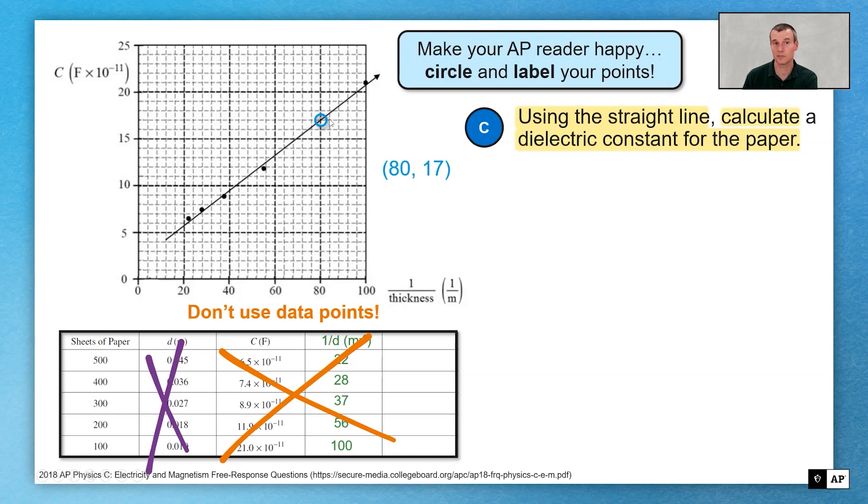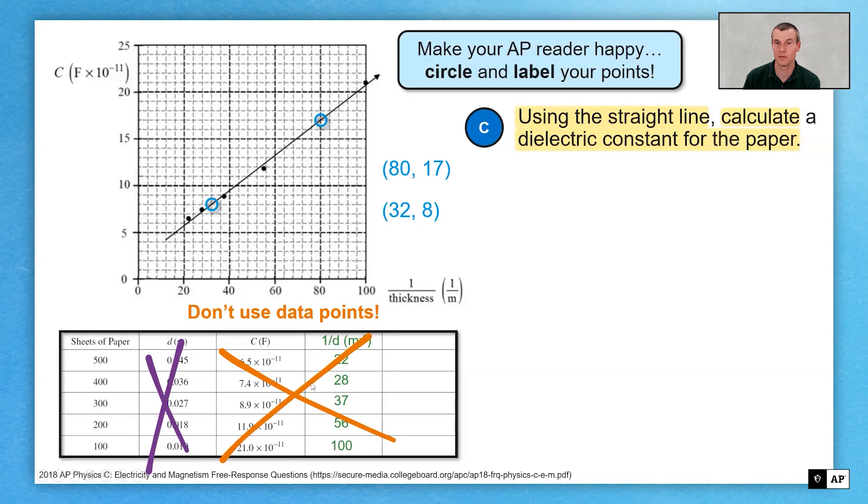So make your AP reader, could be me sitting there reading it, make me happy by clearly labeling your points. Put a circle on the line, pull your data off to the side. If you do that, then I know that you're using data points from the line, not from the raw data itself. Always use data from the trend line, not from your data points.